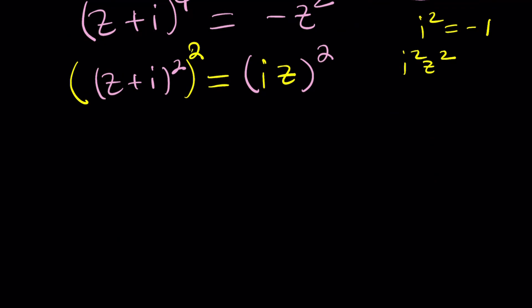Remember, there's going to be two solutions. First one, Z plus I squared equals IZ. And if you remember, we've done this before. But let's do it one more time.